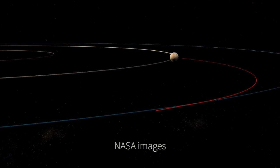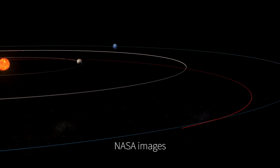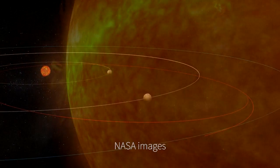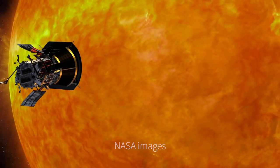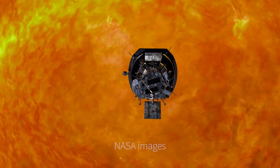The Parker Solar Probe is the first spacecraft to come close to the Sun. It'll dive to within just 6.2 million kilometers of the surface. That's more than seven times closer than any spacecraft has come before.